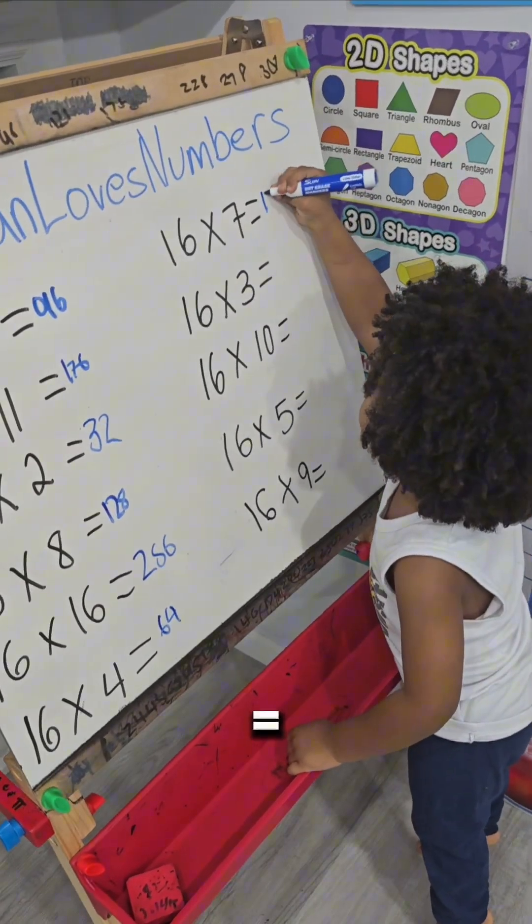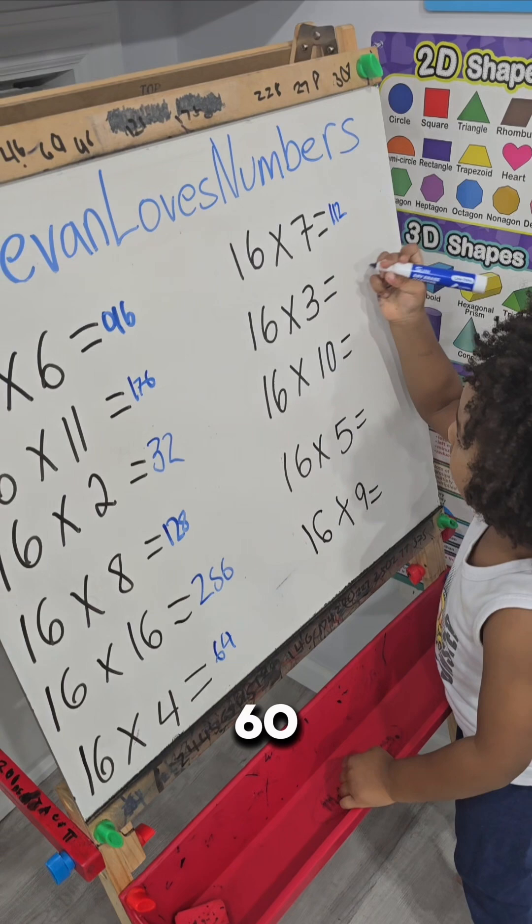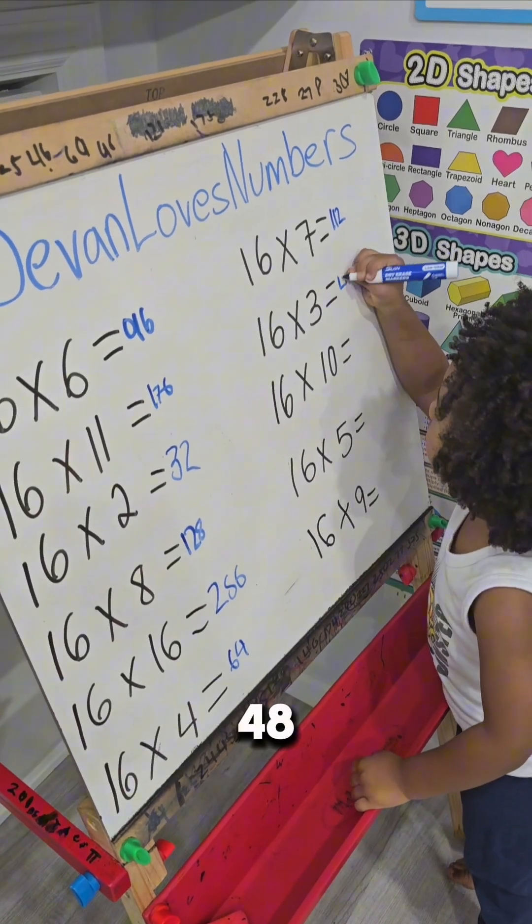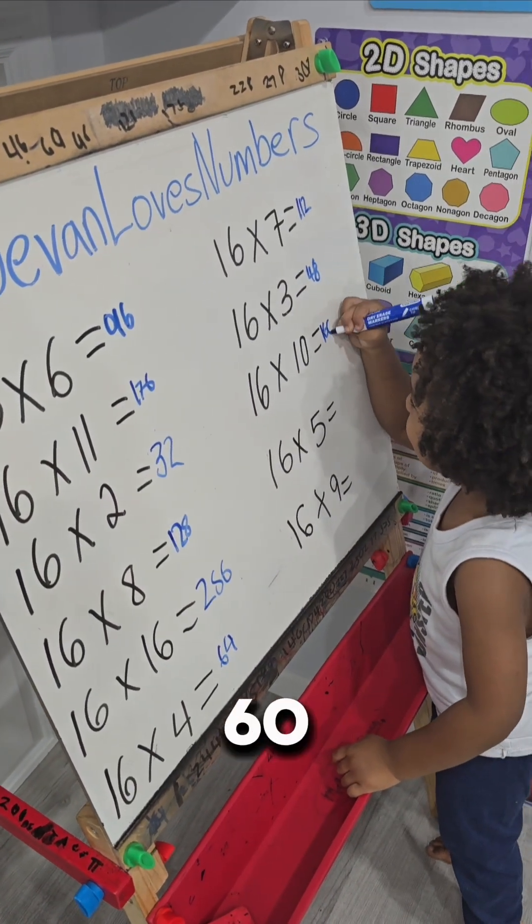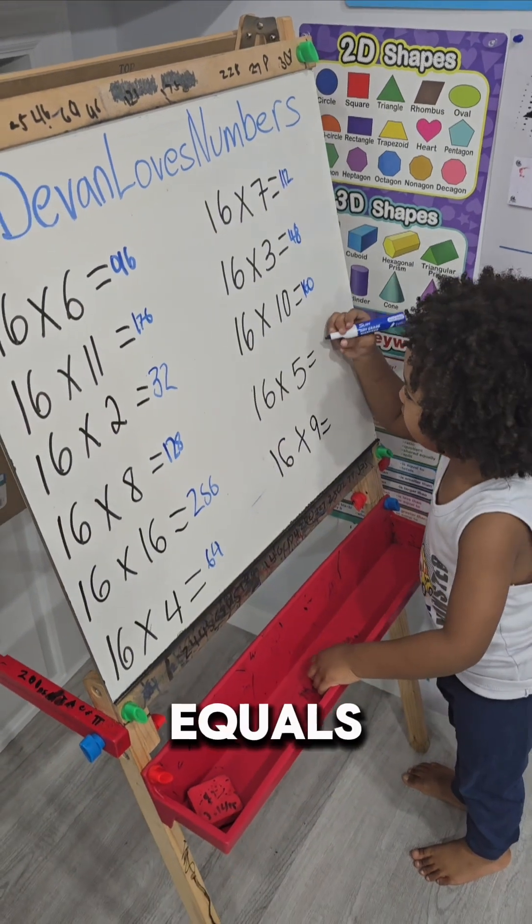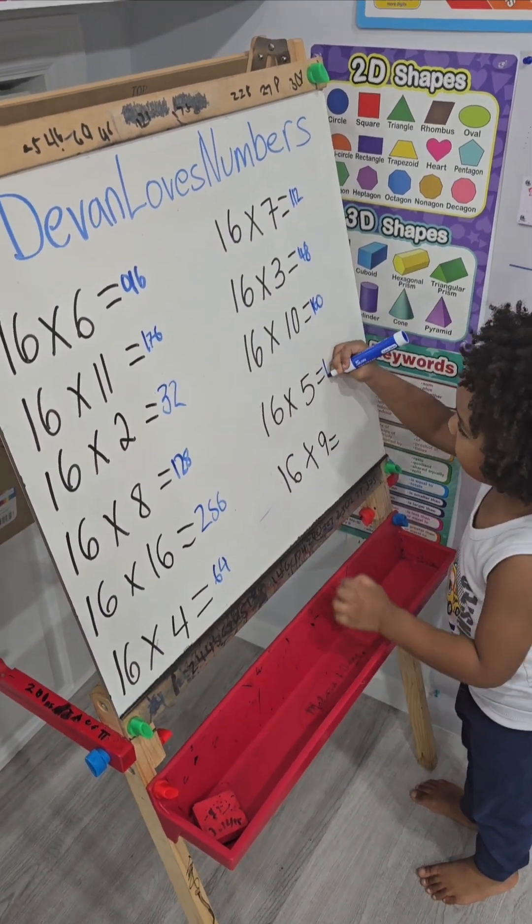16 times 11 equals 12. 16 times 3 equals 48. 16 times 9 equals 160. 16 times 5 equals 180.